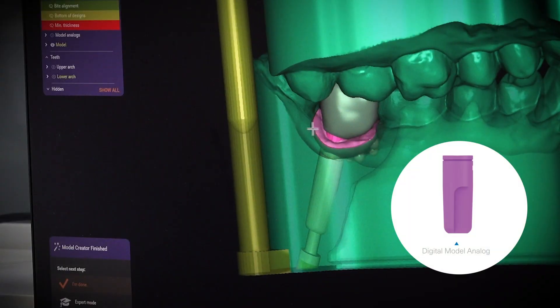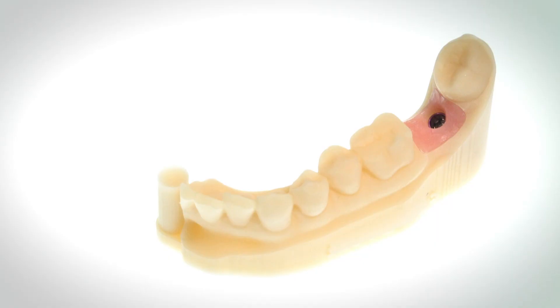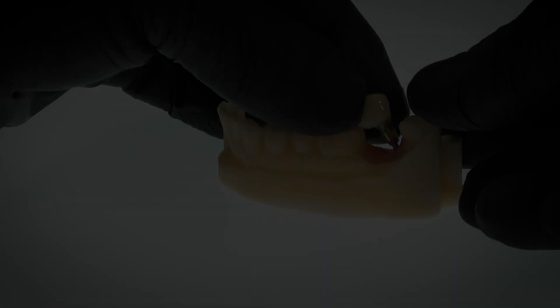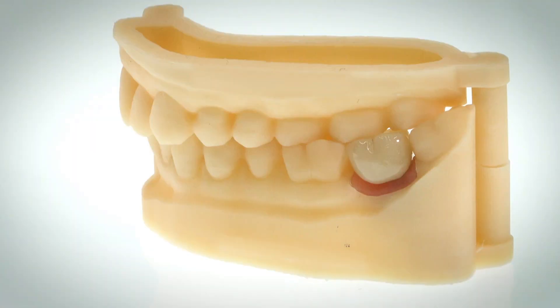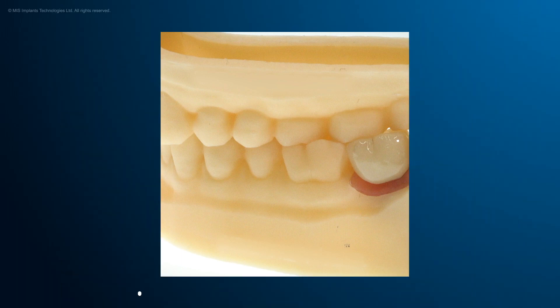In parallel, design and prepare a printed model with a digital model analog. Screw the crown tie base assembly to the analog. The model is now ready to be sent back to the clinician.